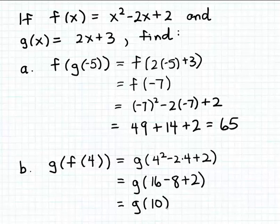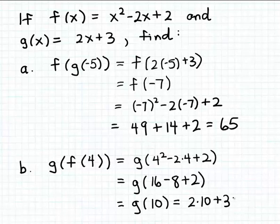So we're left with evaluating g of ten to finish evaluating the original expression. We substitute ten for x in the formula for g: two times ten plus three. Two times ten plus three simplifies to twenty-three. So g of f of four is equal to twenty-three.